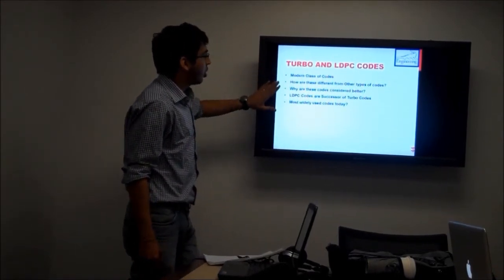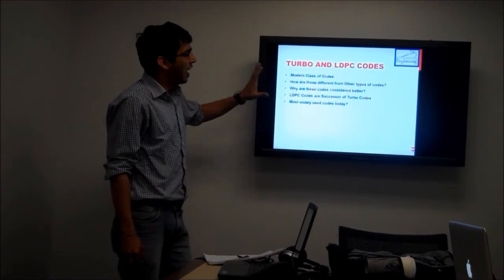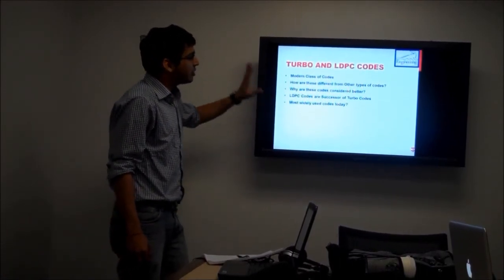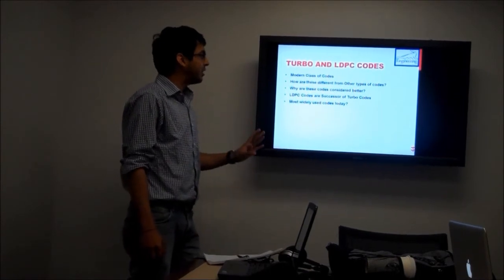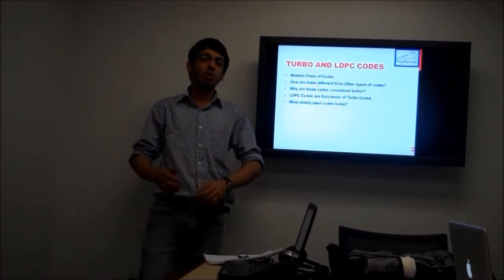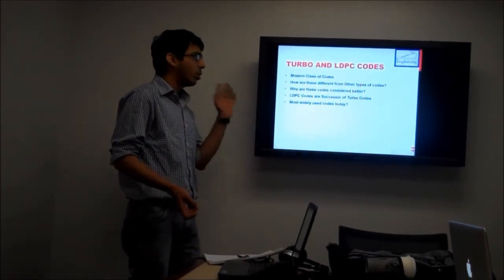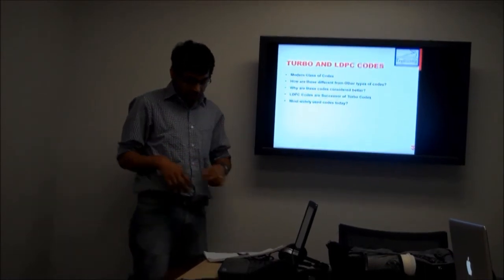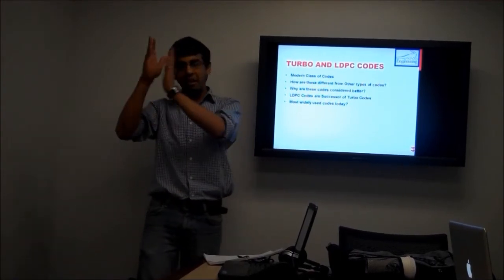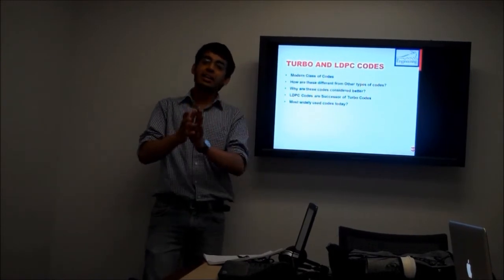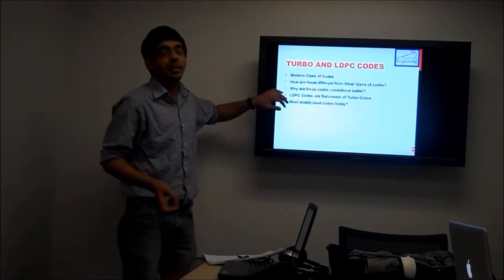Now we will discuss two of the most important classes of codes: turbo codes and LDPC codes, also termed as modern codes, which are the most widely used in wireless communication systems today. Until the early 1990s, people were designing codes like convolutional codes, BCH codes, and Reed-Solomon codes, but the coding gain achieved was not really close to the Shannon limit. They also introduced the computational cutoff rate concept — a practical limit achievable by codes — which was actually less than the theoretical Shannon limit.